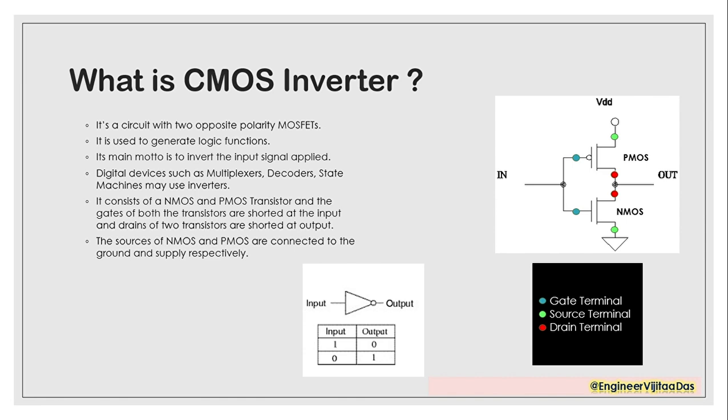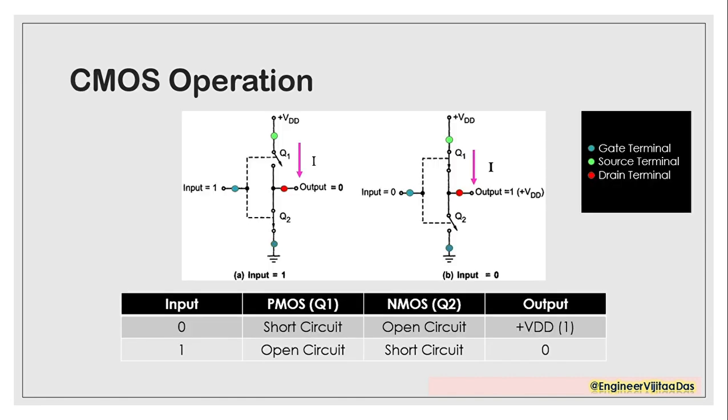Next, we are going to see CMOS operation. PMOS is Q1 and NMOS is Q2 for both diagrams. When we are giving input as 1, this is the common gate for both NMOS and PMOS. When we are giving input as 1, for PMOS it will go as inverted 1, so it will become 0.